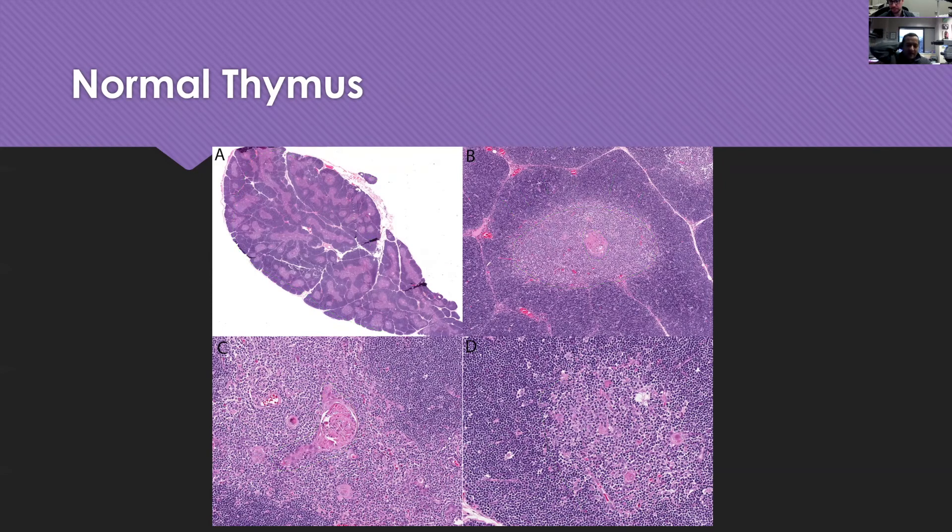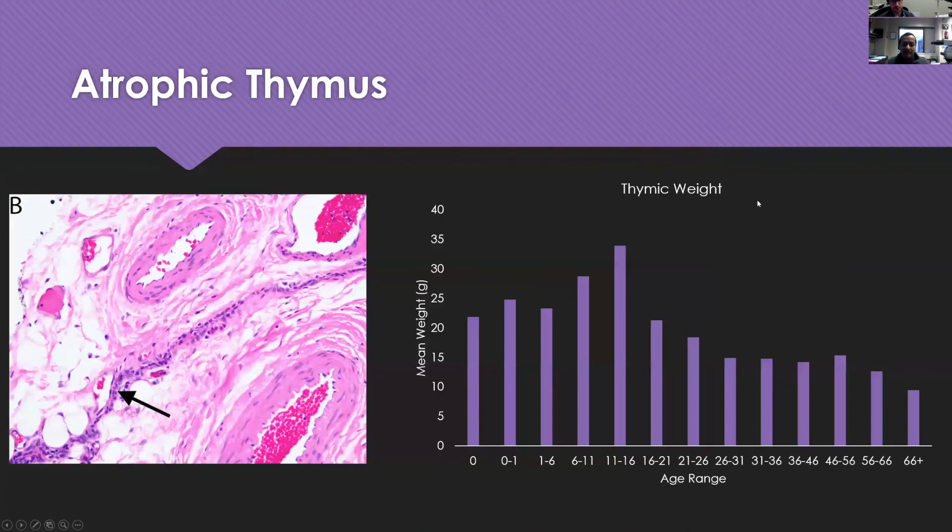In a practice that mostly deals with adult patients like mine, I rarely ever see this kind of beautiful thymus with all the classic architecture. What most people will see in adults is atrophic thymus which looks nothing like this. This is the ideal, the childhood thymus, which then gradually involutes and all this epithelial stuff and lymphoid stuff starts to disappear. What you're left with is mostly fat.